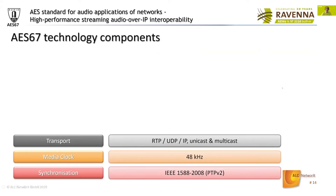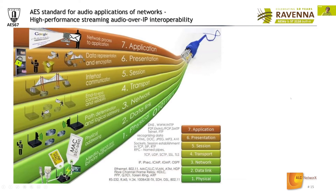The next layer we need is transport. We don't want only synchronization; we also want transport of media. For transport, we use the RTP protocol, which runs over UDP/IP in both unicast and multicast transport modes. When talking about network connectivity, we can't avoid talking about the OSI model. The OSI model is a layered model which describes communication between any two network devices or applications on the network.